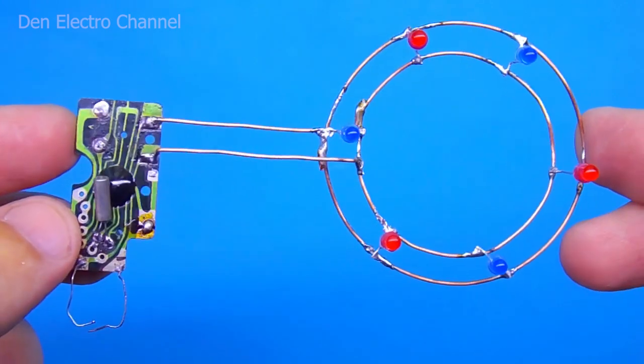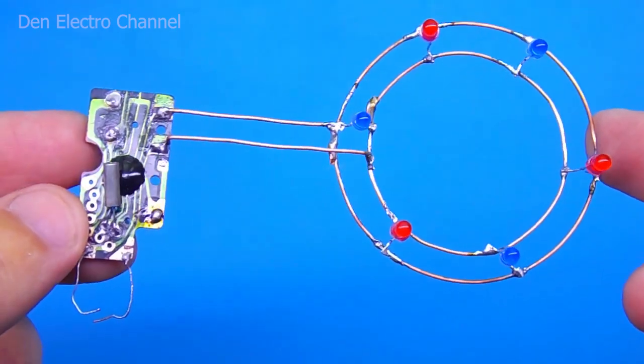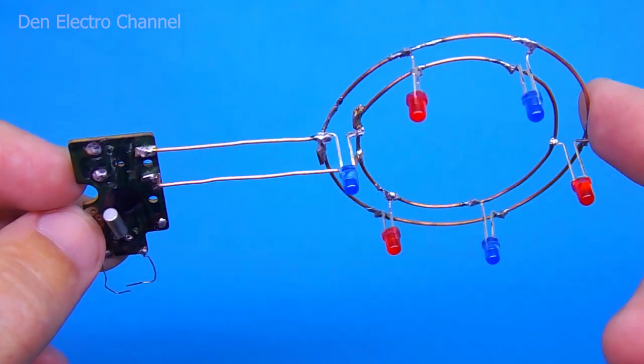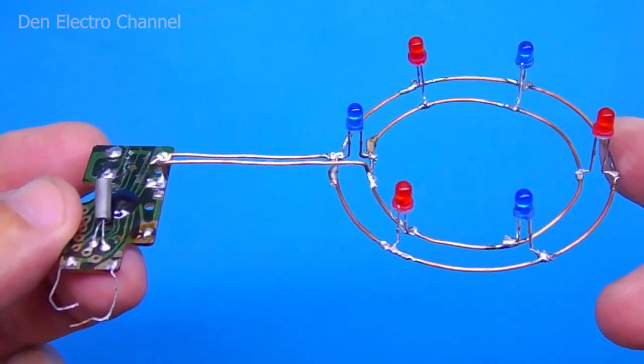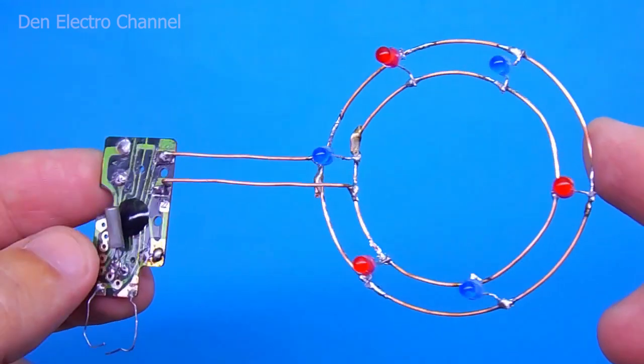Then we solder this design to the board. I connected the circle with the board with copper wire. But you do not have to do this. Instead, you can take ordinary wires.